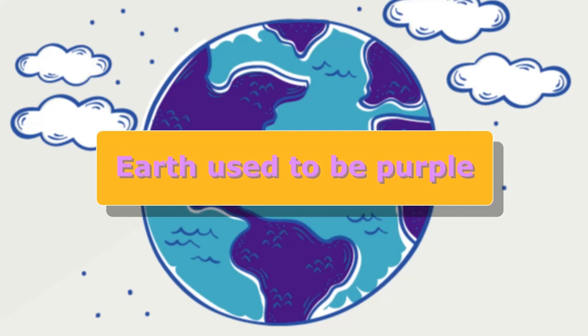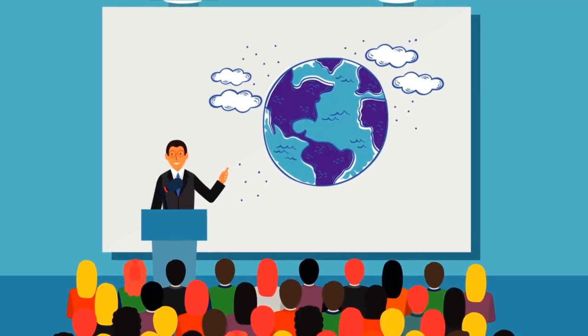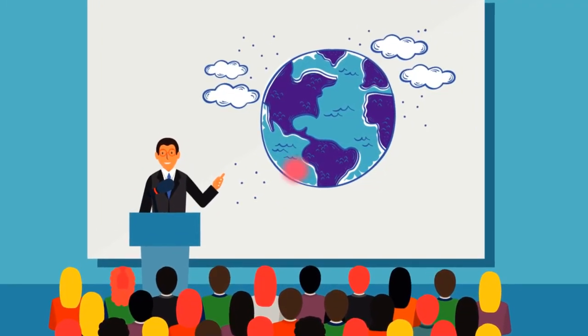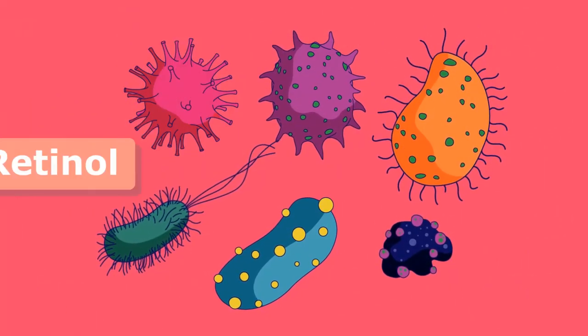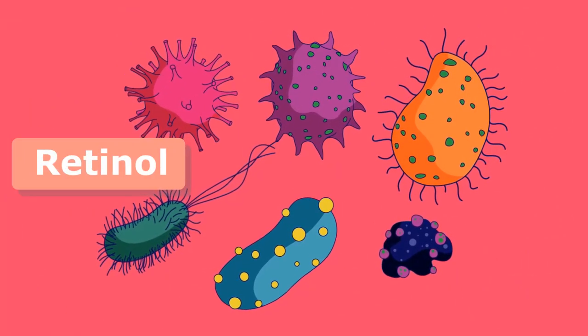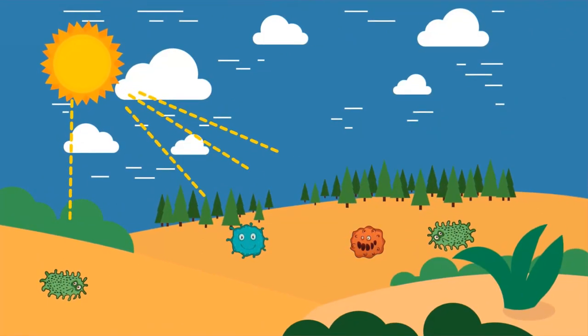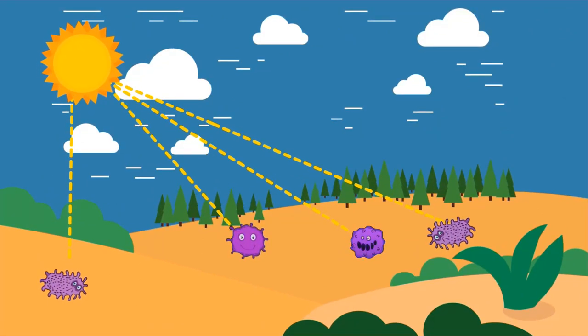Earth used to be purple. At least, this is one of the scientific theories based on the idea that ancient microbes relied on retinol rather than chlorophyll to absorb the sun's rays. Retinol absorbed green light and reflected back a violet red light, giving a purple color.